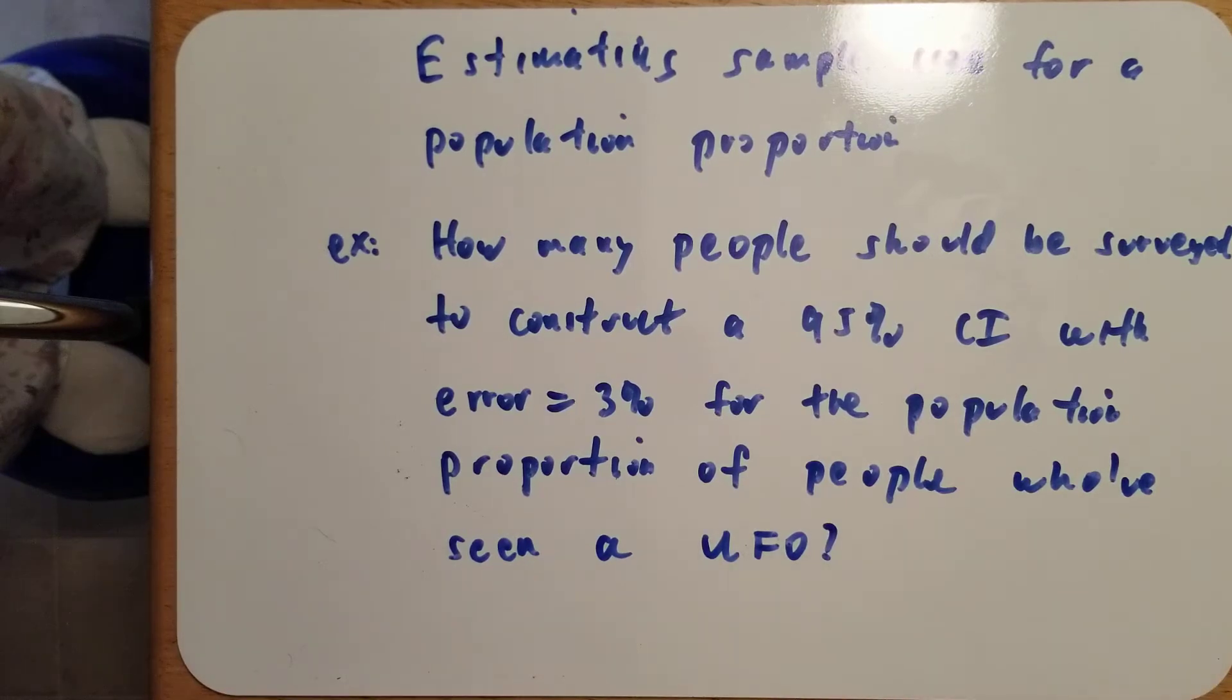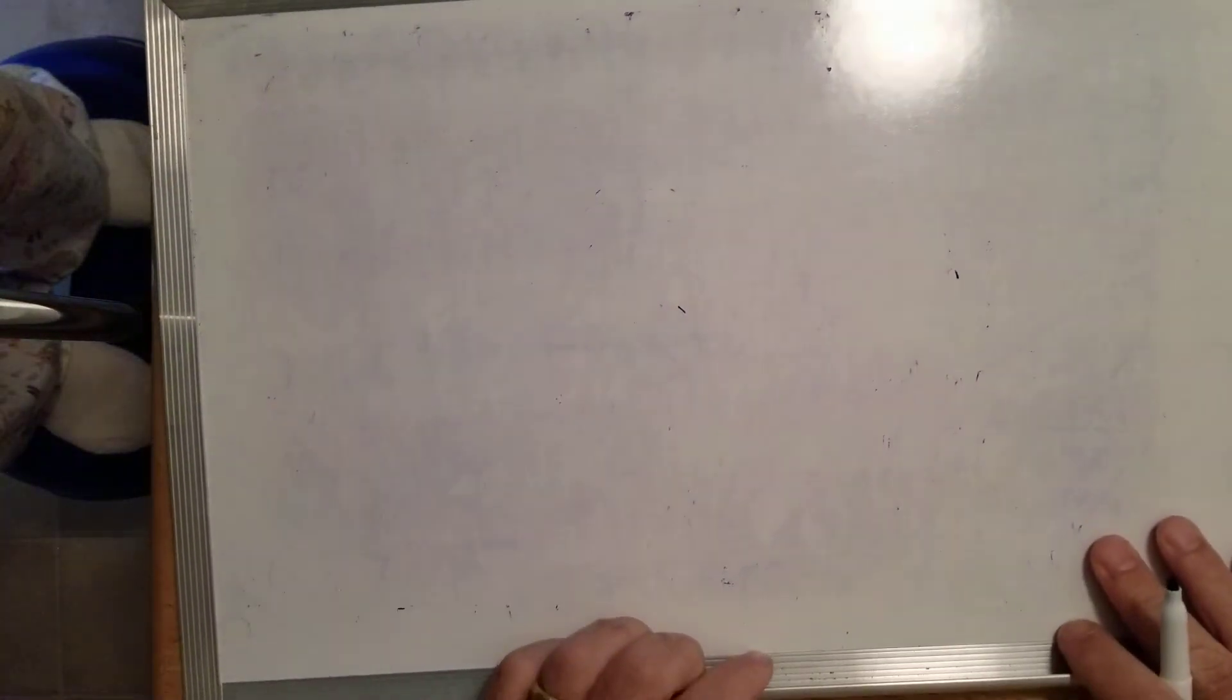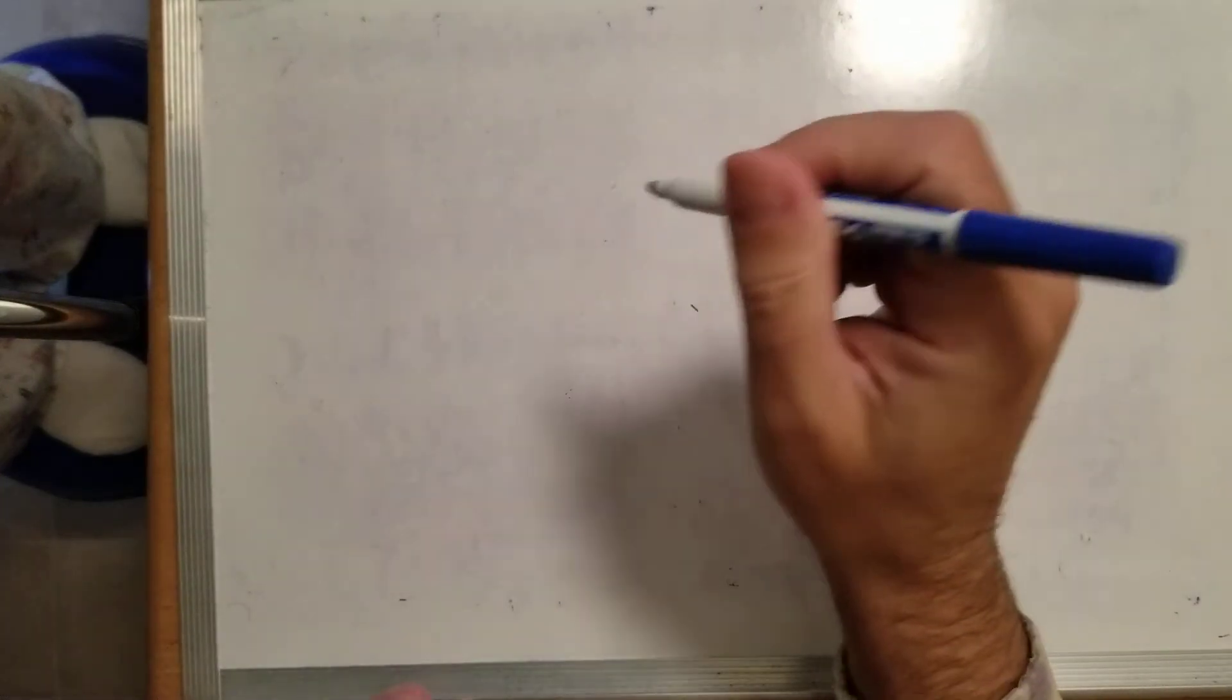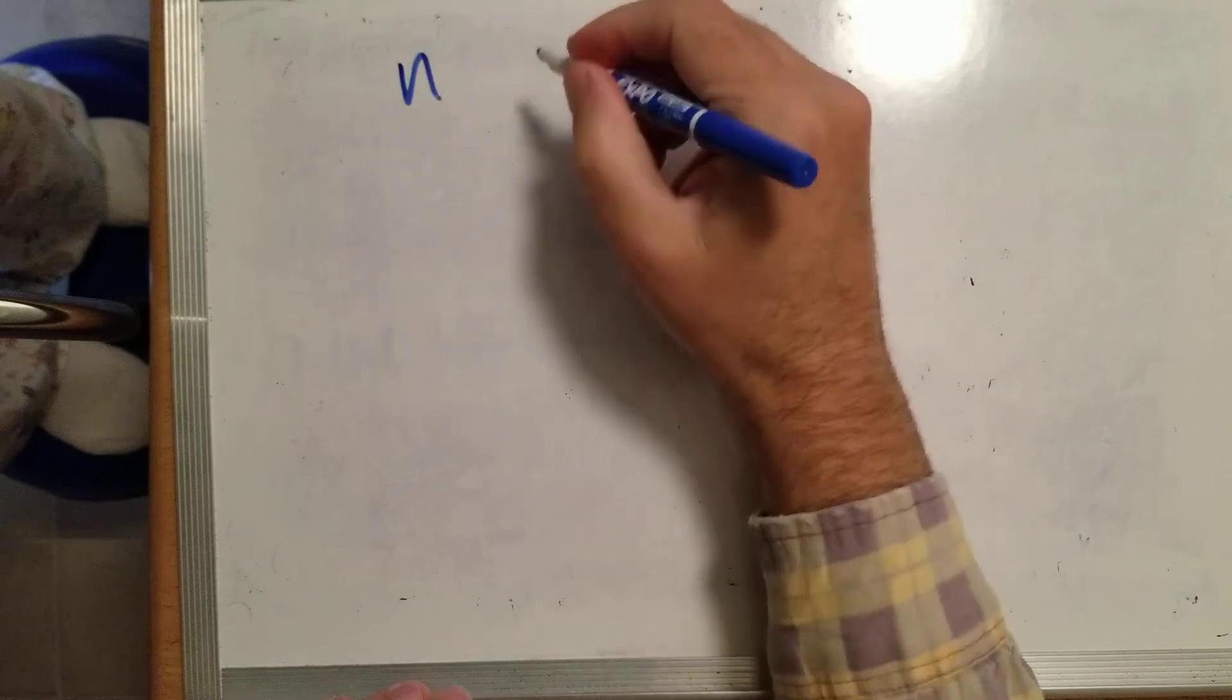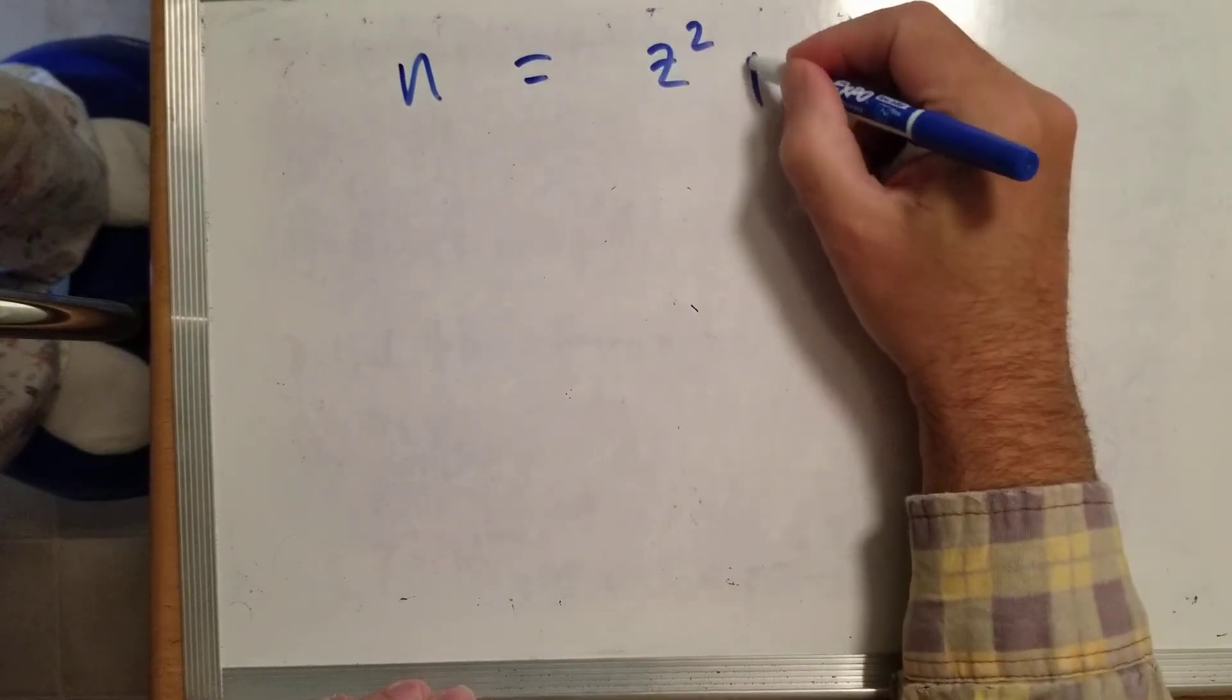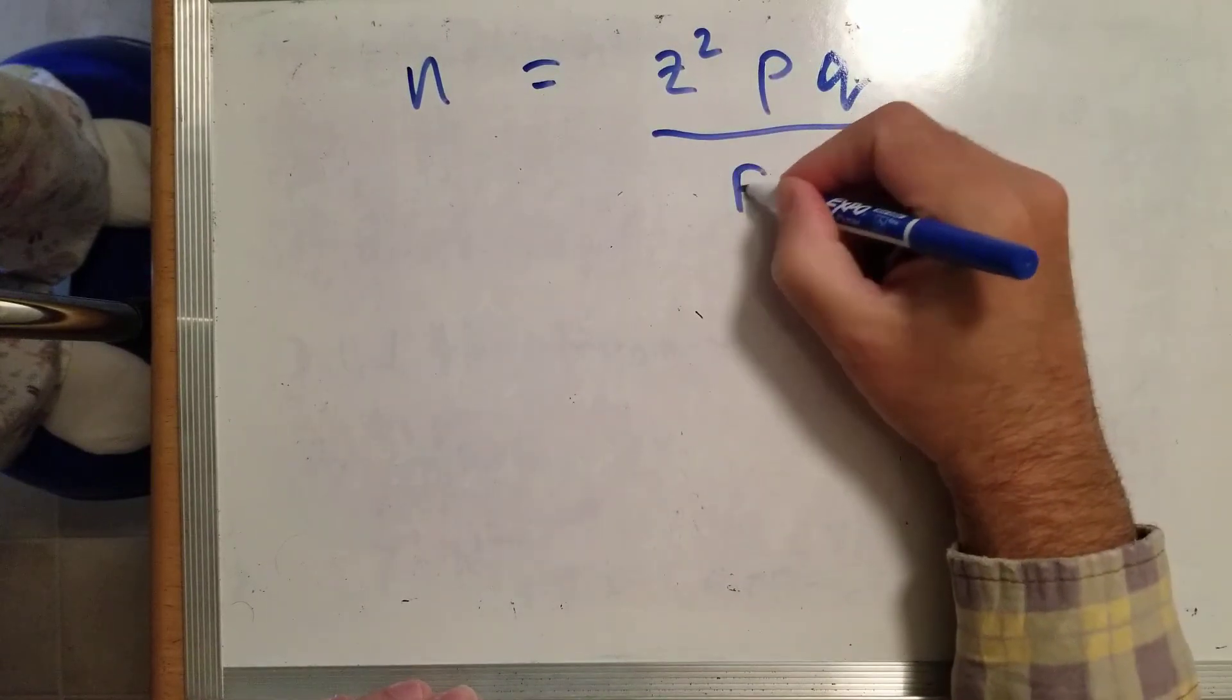For this question, how many people should we survey? I'm going to give a formula to discuss before doing this calculation. The formula is N, which is the number of people, equals Z squared PQ over E squared.